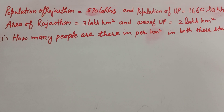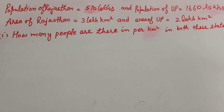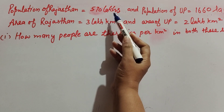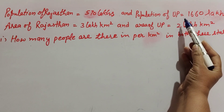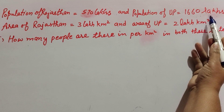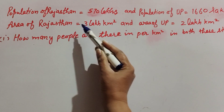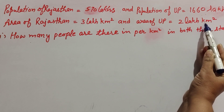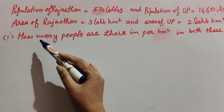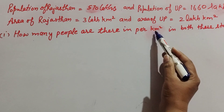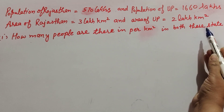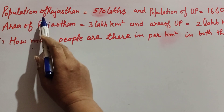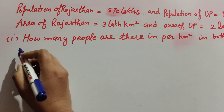Hello friends, welcome to my channel. In this video we discuss: population of Rajasthan is 570 lakh and population of Juppies is 1,660 lakh. Area of Rajasthan is 3 lakh kilometers square and area of Juppies is 2 lakh kilometers square. How many people are there per kilometer square area in both states? First we discuss about Rajasthan.